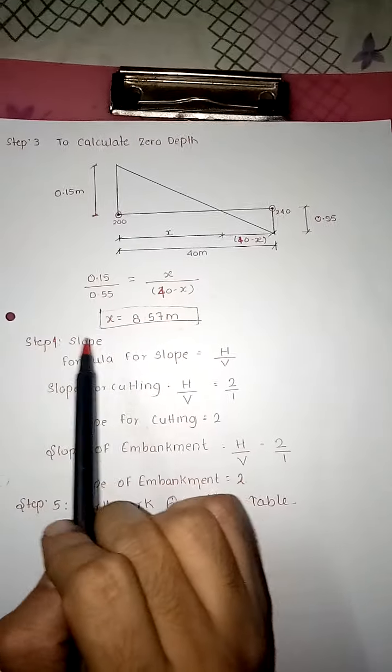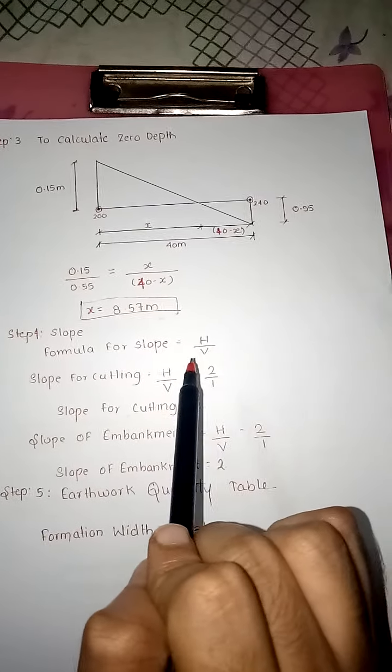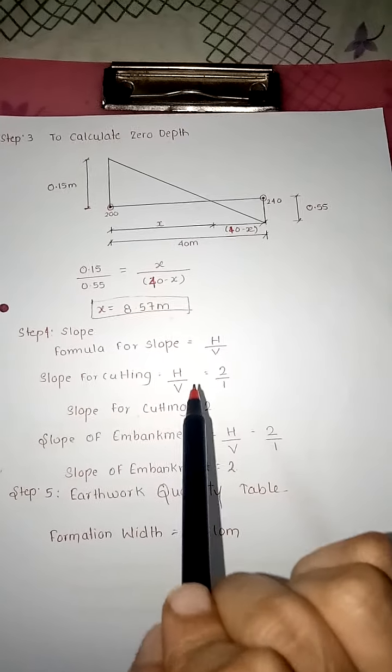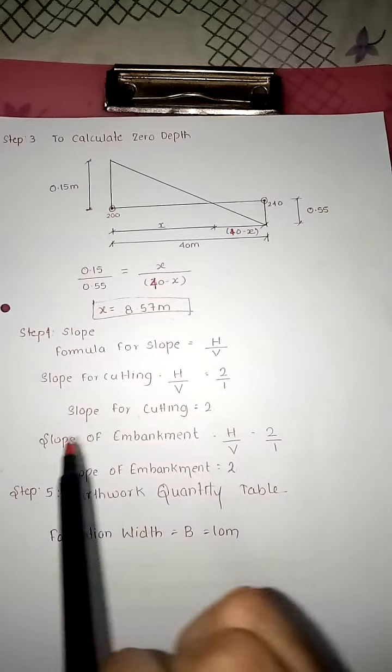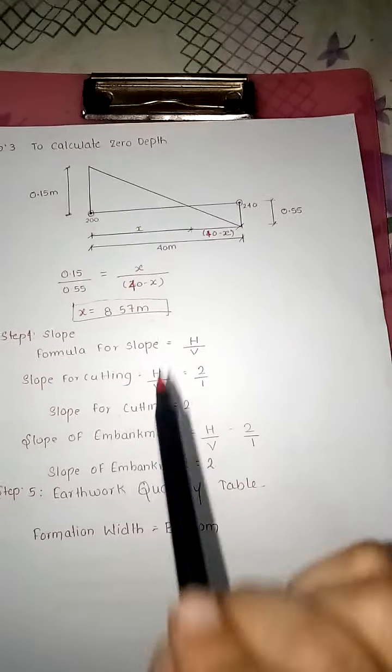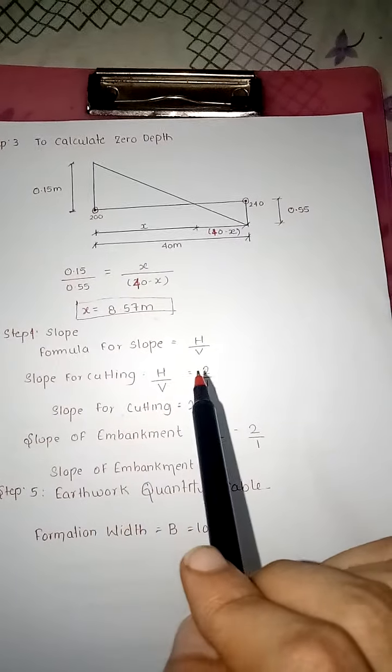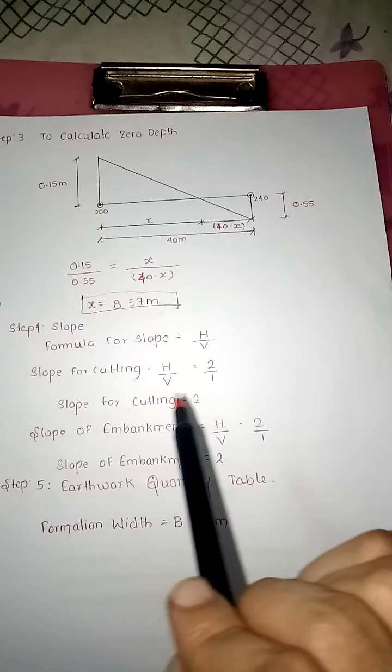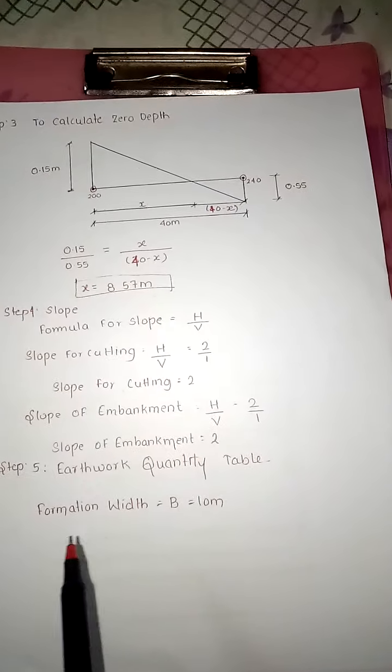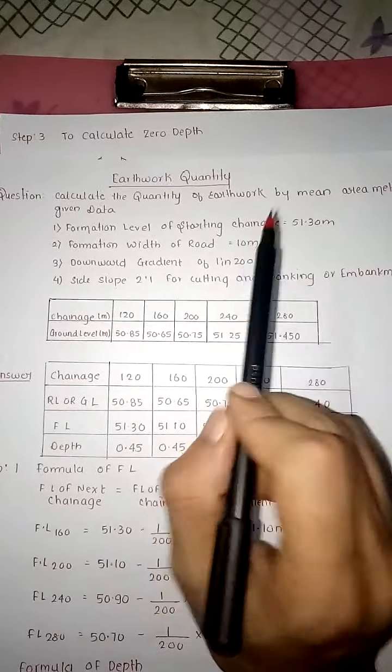Now step number 4: slope. Formula for slope is H upon V. Slope for cutting: horizontal upon vertical equals 2 upon 1. Slope of embankment is also same, though they can give different slopes at different places. Always vertical should be 1. Earthwork quantity table: formation width given in question is 10 meter.